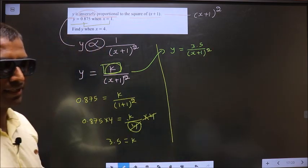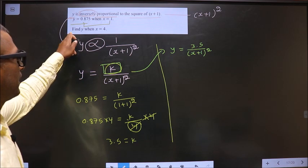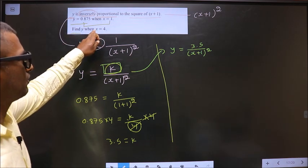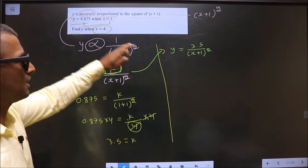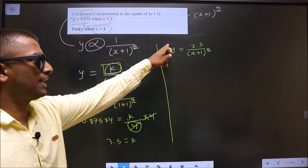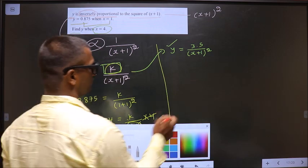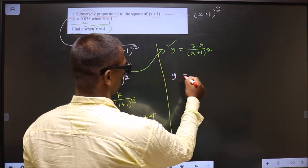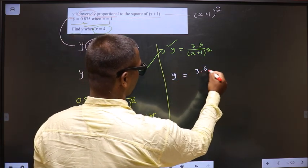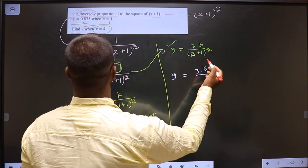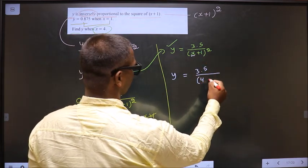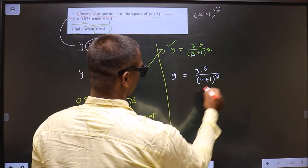So 3.5 by 4 plus 1 is 5 square. Okay, next. Find y when x equal to 4. Now replace x equal to 4 in the equation to get y. So let us replace y equal to 3.5 by x is 4. So 4 plus 1 whole square.